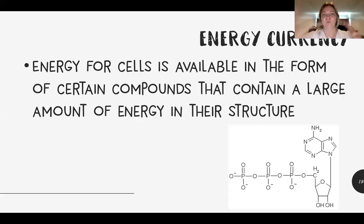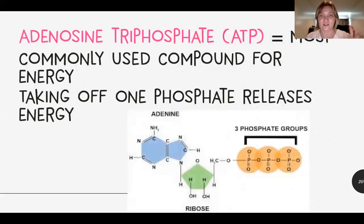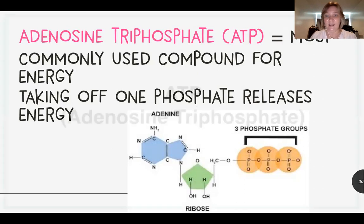Now focusing on ATP, which will bring back the functional group phosphate. Energy for cells is available in the form of certain compounds that contain a large amount of energy in their structure. This is a structural formula for ATP, which is adenosine triphosphate. You have the adenine, you've got a ribose, which is a sugar, and you've got three phosphate groups. When you take off the one phosphate group on the end, that releases energy. You're going to see this a lot when we study biochemical reactions in biology, like photosynthesis, cellular respiration, even muscle contraction. That's how it works.